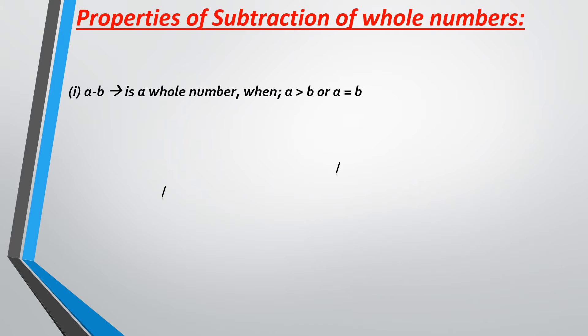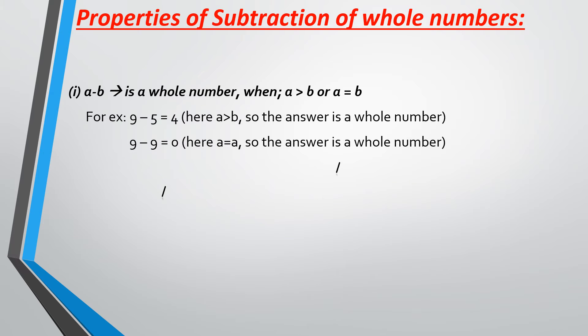Properties of subtraction of whole numbers. A minus B will be a whole number whenever A is greater than B or A is equal to B. For example, here 9 is A and 5 is B. Clearly A is greater than B, so my answer 4 is going to be a whole number. Similarly, when A equals A — when 9 equals 9 — my answer is 0, and 0 is also a whole number.